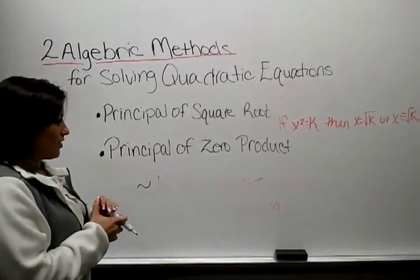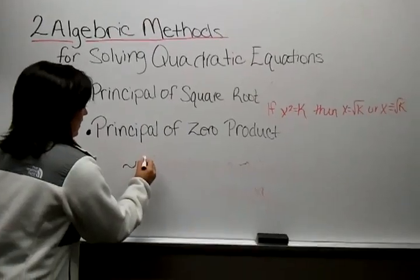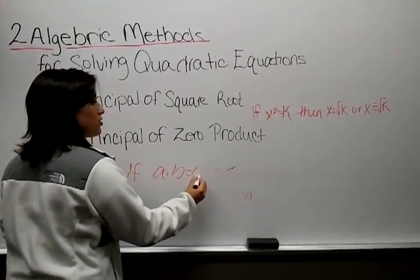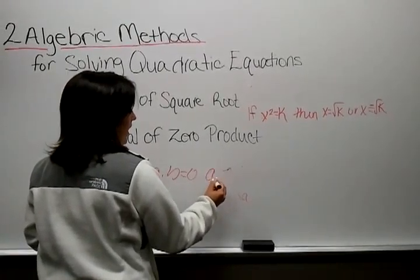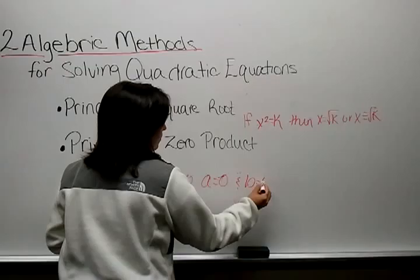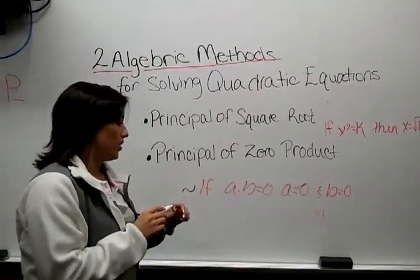Then the principle of the zero product is if a times b is equal to zero, then a is equal to zero and b is equal to zero. And this works vice versa.